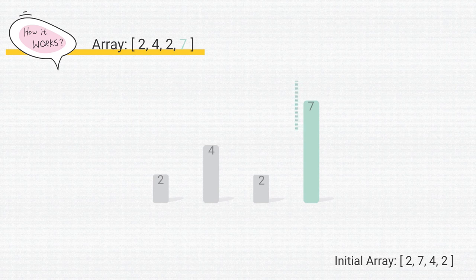We draw a dashed line right before 7 to remind ourselves that from now on we don't need to consider it anymore.